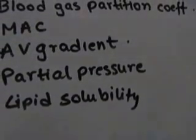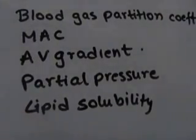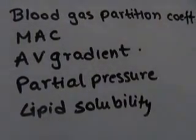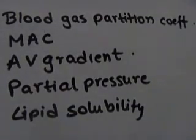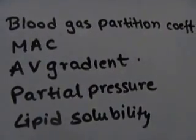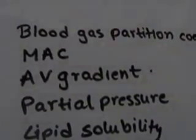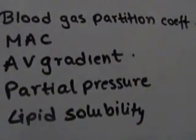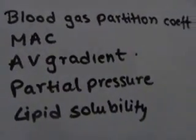Hi everyone, we're going to talk about some terms used while describing anesthetics. I've learned these terms myself online, so if I make mistakes please correct me so we can rectify them. We're going to talk about the blood gas partition coefficient, the MAC which is the minimum alveolar concentration, the AV gradient, the partial pressure, and the lipid solubility of the anesthetic.